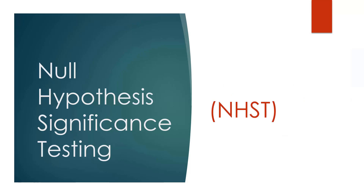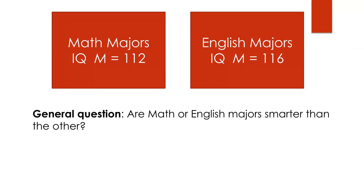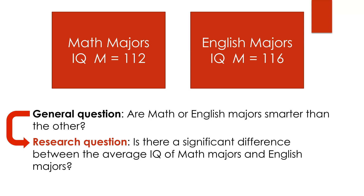This phrase is a bit wordy. It's better abbreviated by the acronym NHST, and that's how I'm going to refer to this process moving forward. Make sure that you know that NHST means null hypothesis significance testing. Now I want to start breaking down this concept with an illustration. Let's say I have a very general question such as: are math and English majors smarter than the other? Well, let's specify that question a little bit better. It's really hard to test general questions, so we need to specify it into something called a research question with more technical language. More technically, if I want to test this scientifically, I should ask: is there a significant difference between the average IQ of math majors and English majors?